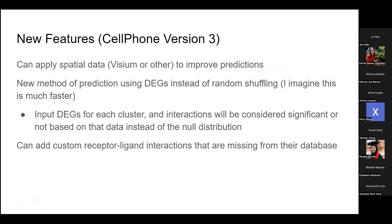What I've been talking about so far has been CellPhone version two, but there is also a version three that came out a few months ago. In this new method, you can also input spatial data — Visium or other formats — to improve the predictions. You might imagine that if cells expressing receptors are very far away from cells expressing the ligand, maybe they're not really communicating, so spatial data can improve predictions.